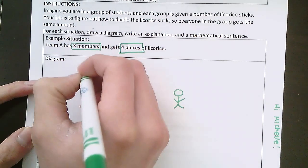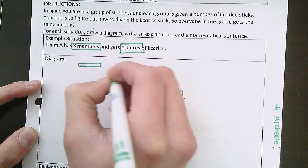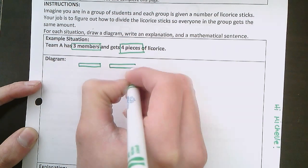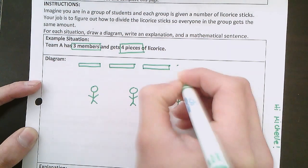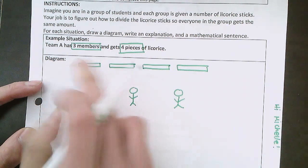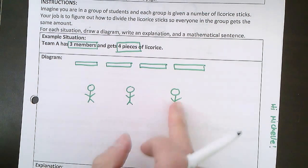And we also know that we have four pieces of licorice. For licorice we're just going to draw little rectangles like this. So we have one piece, two pieces, three pieces, and four pieces. So here we have our four pieces of licorice, and we have to divide it evenly among these three people.